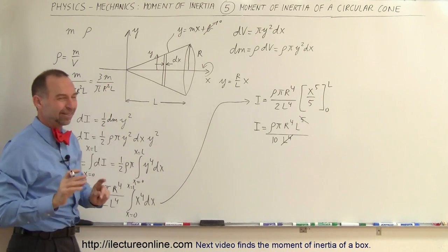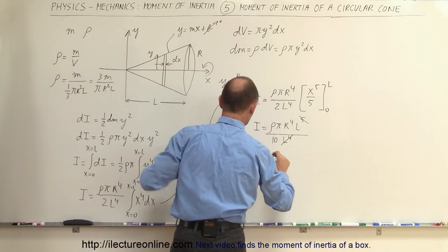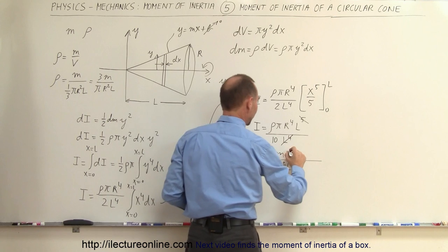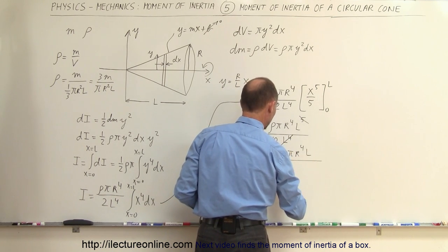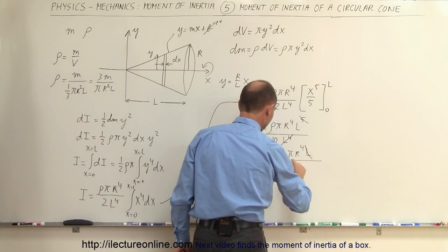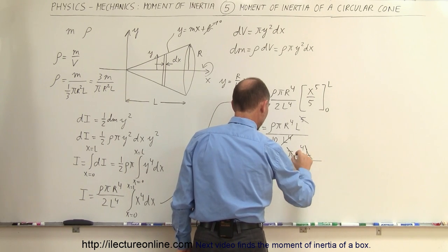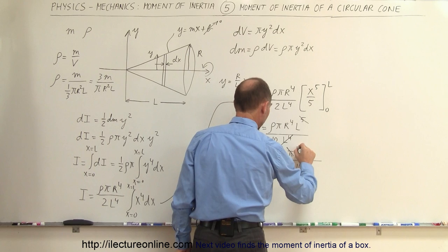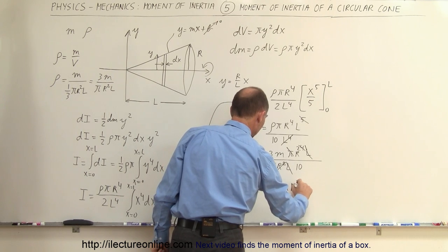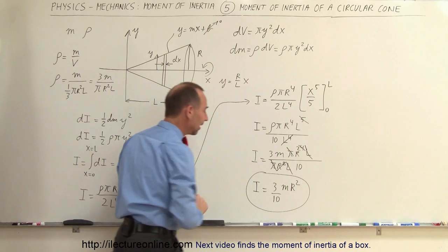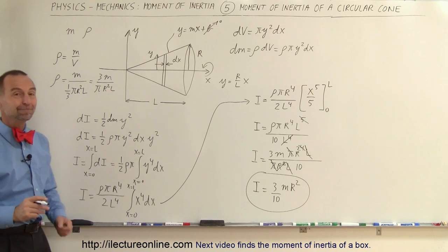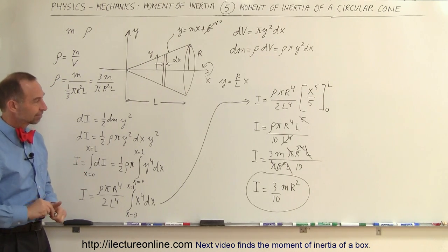Replacing density with 3M divided by pi R squared L, we have 3M divided by pi R squared L, times pi R to the fourth L in the numerator and 10 in the denominator. Simplifying: the L's cancel, the pi's cancel, and R to the fourth over R squared becomes R squared. The moment of inertia equals 3 times M times R squared divided by 10, or three-tenths MR squared. That is the moment of inertia of a solid cone.